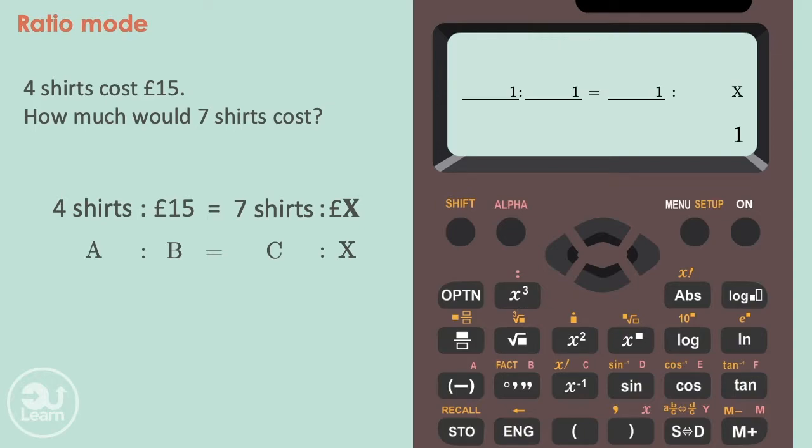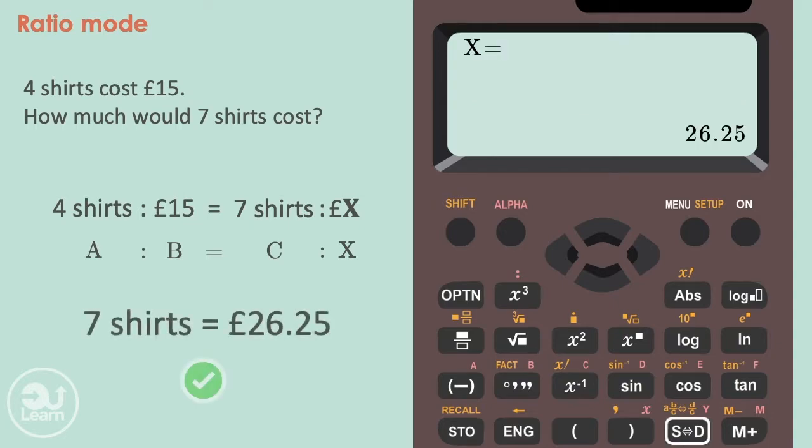Let's select this option by pressing 2. All we do is type the values we have. 4 followed by equals. 15 followed by equals again. 7 followed by equals. And then we finally press equals once more to get to our final answer. We now know the price is £26.25.